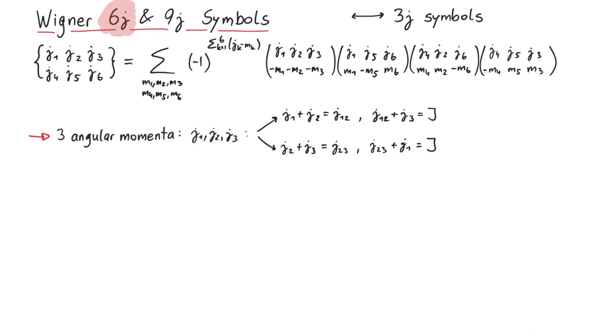If you couple them in one way, but now realize you actually wanted to go the other way, the 6j symbols can help you. That's why they are called re-coupling coefficients.